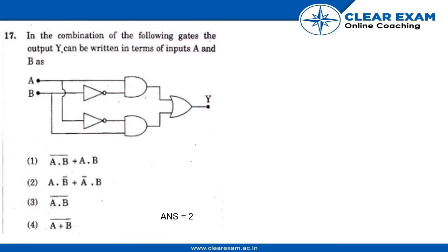Hello guys, we have a question here that says in the combination of the following gates, the output Y can be written in terms of input A and B. Okay, so these are our two input nodes. This is our first gate, this is our second gate.